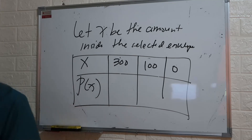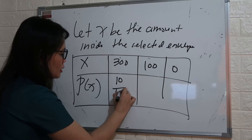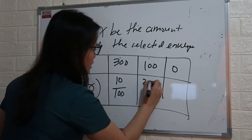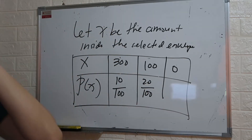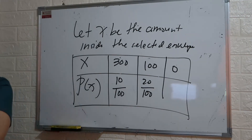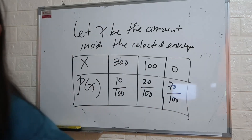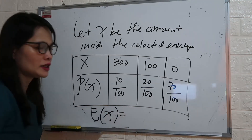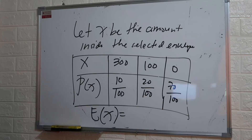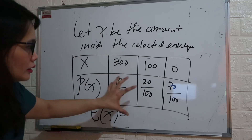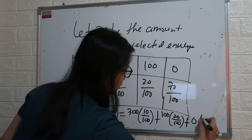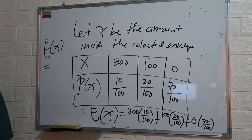So what is the probability of getting 300? Out of 100 envelopes, 10 contain 300 pesos, so the probability is 10 over 100. For 100 pesos, there are 20 envelopes, so the probability is 20 over 100. And for nothing, the rest — 70 envelopes — are empty, so the probability is 70 over 100. To solve for the expected value: 300 multiplied by 10 over 100, plus 100 multiplied by 20 over 100, plus 0 multiplied by 70 over 100 equals 50 pesos.